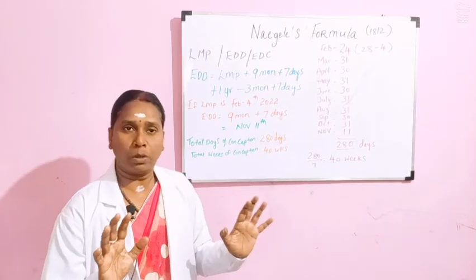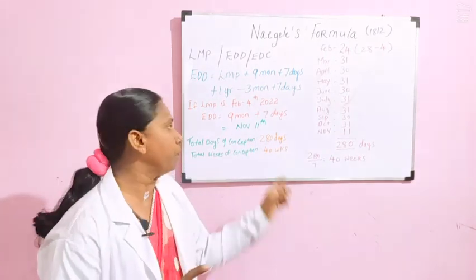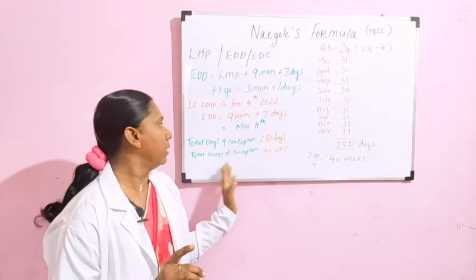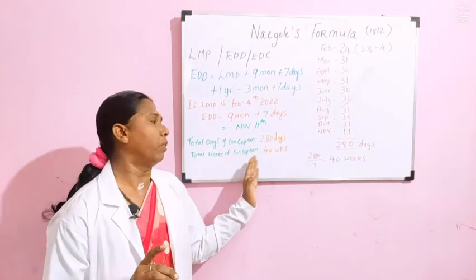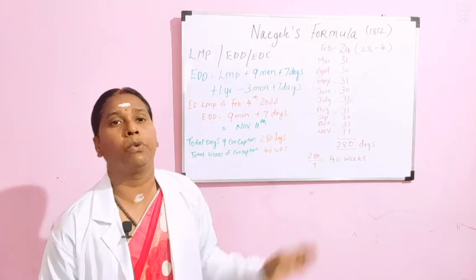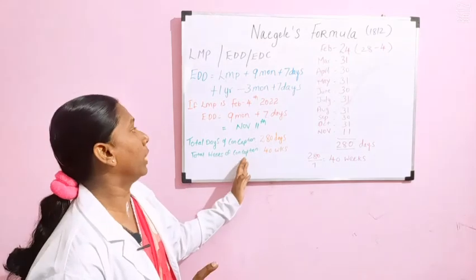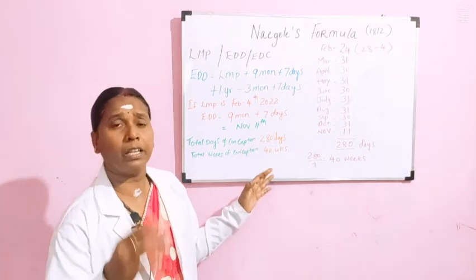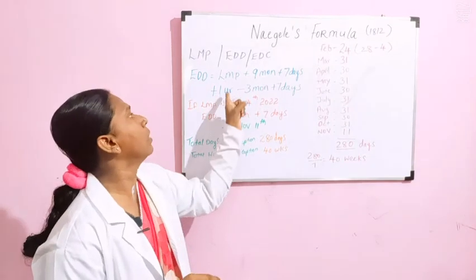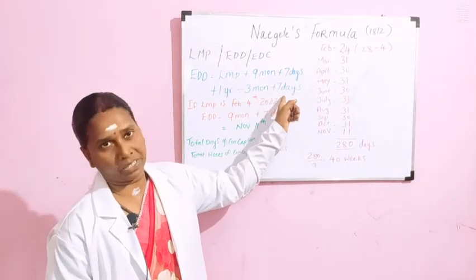Whatever you calculate, the number of days must come to 280 days and the number of weeks for gestation is 40 weeks. Now, similarly, if you use the other formula — that is LMP plus 1 year minus 3 months plus 7 days — let's verify.